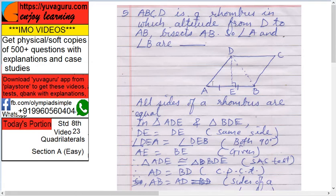ABCD is a rhombus. Rhombus means what? All sides are equal. Diagonals bisect each other at 90 degrees. Always remember these basics.